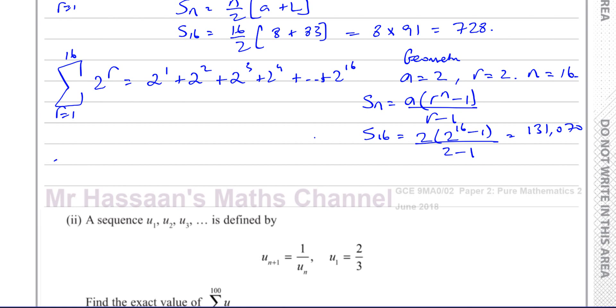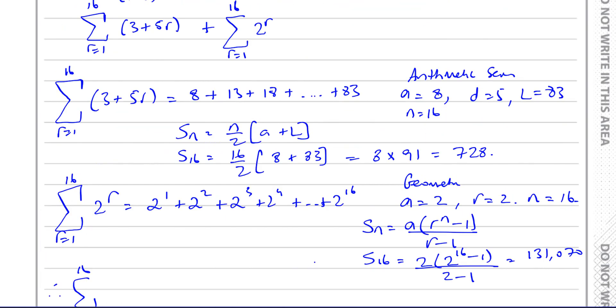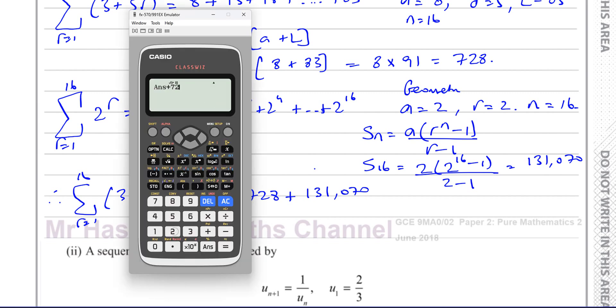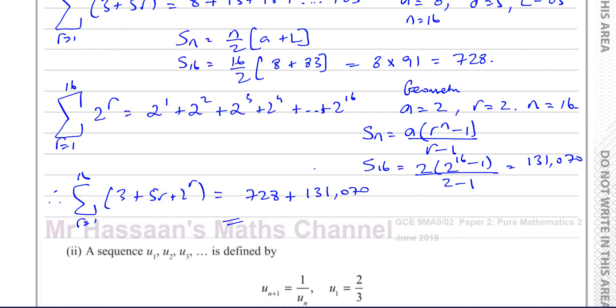So now we can find the total sum. This is the second part of the question. We can therefore say the sum from r equals 1 to 16 of the original expression, which is 3 plus 5r plus 2 to the power of r, is equal to, and we have 728 plus 131,070. So if we just add to that 728, that gives us 131,798.